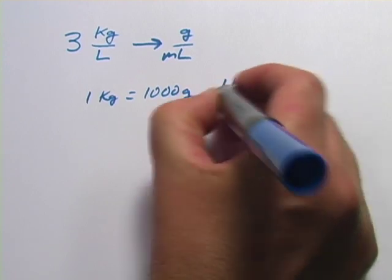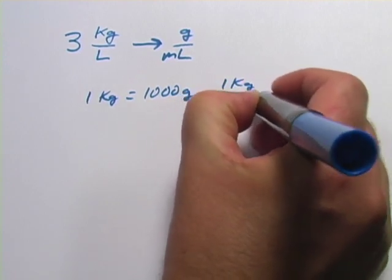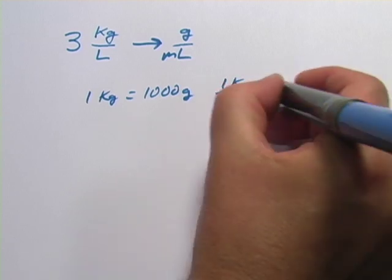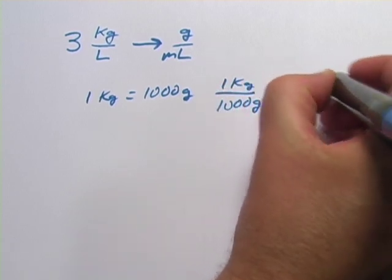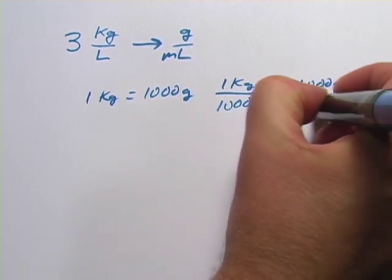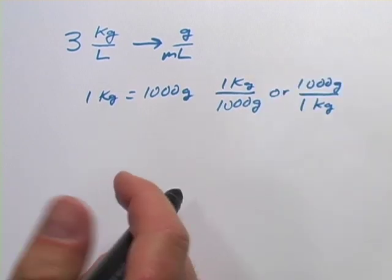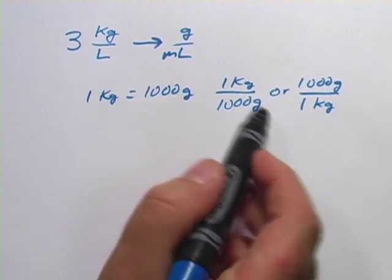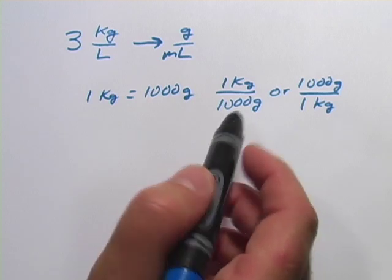You could put the kilograms on top and the grams on the bottom or the grams on the top and the kilograms on the bottom. Either one. One of those is going to work for us and we'll figure out which one in a minute.